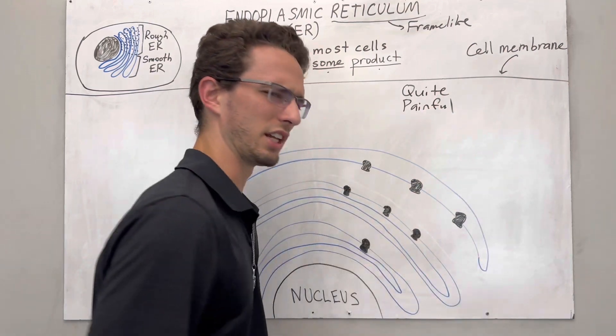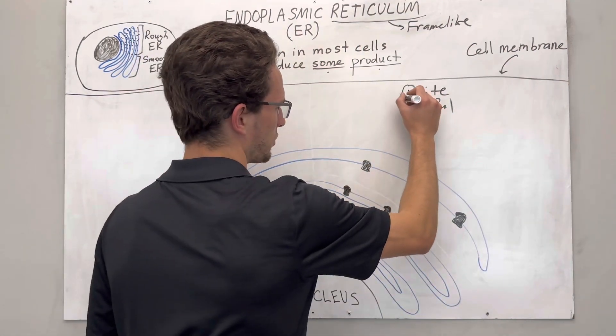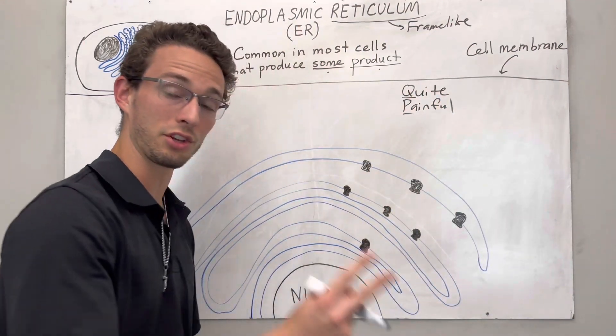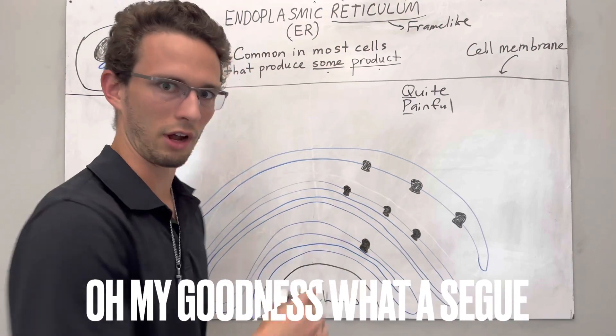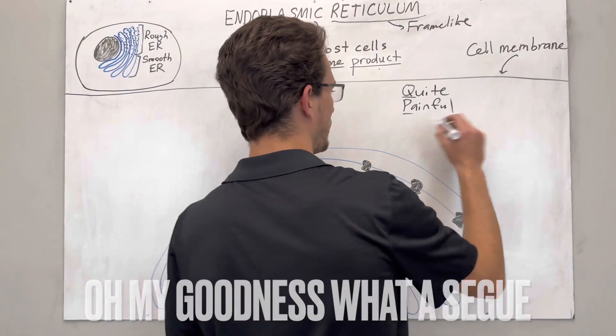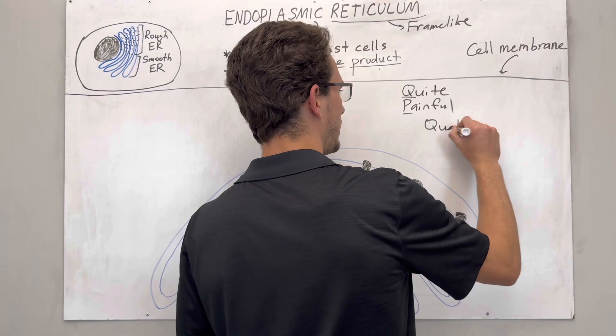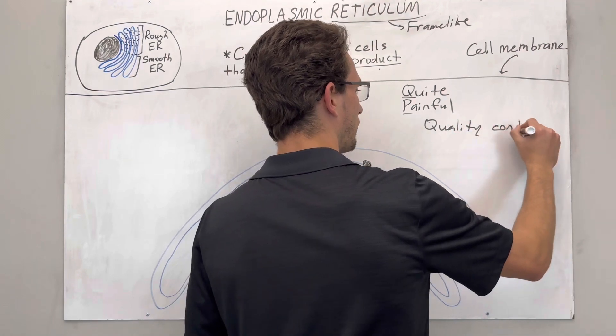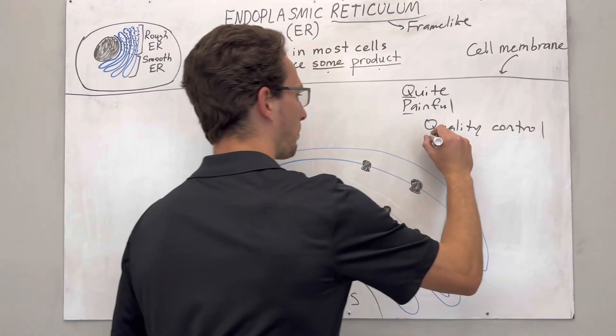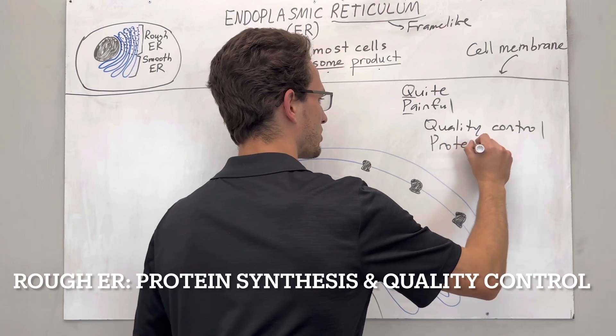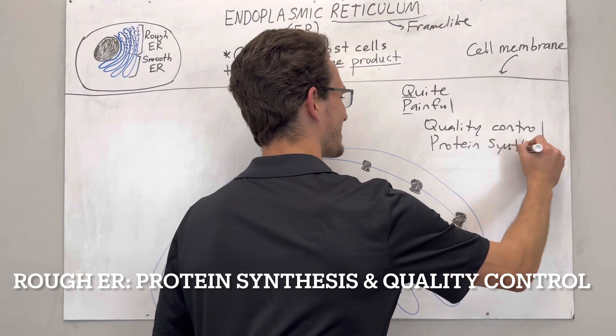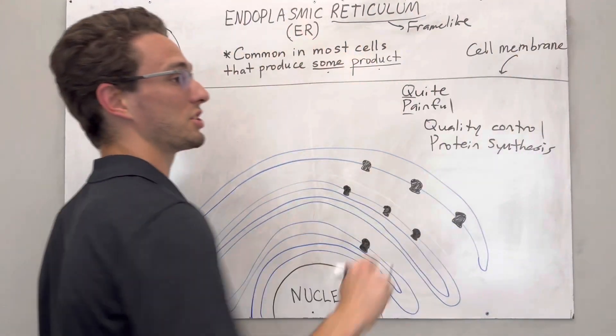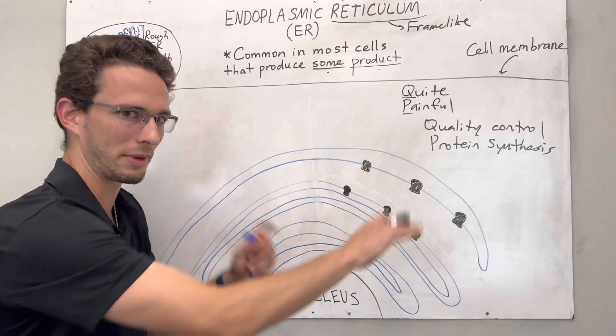Well, interestingly, quite painful begins with Q and P. And those are actually the two functions of the rough ER. Let's point them out. The Q stands for quality control for the P, protein synthesis. Let's talk about this a little bit, guys. Hey, thank you, Rough Mr. Jackson. I appreciate it. So what does this all mean?